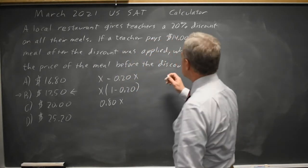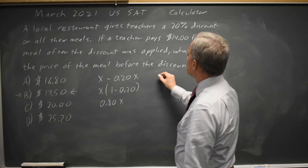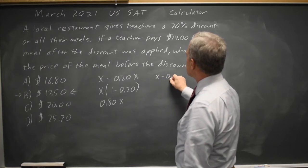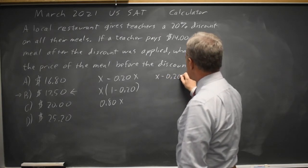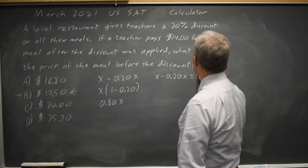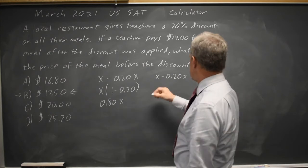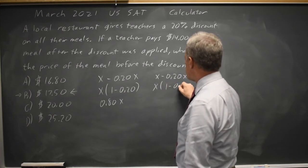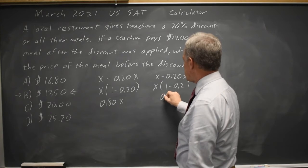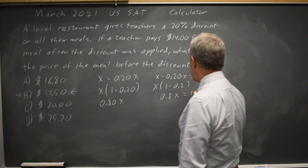Alternatively, I can say x minus 0.2x equals $14. So that's x times 1 minus 0.2, so that's 0.8x equals $14.